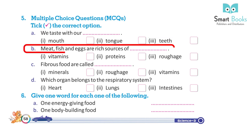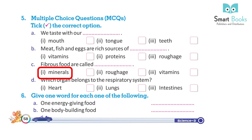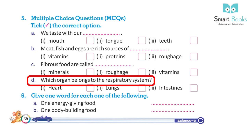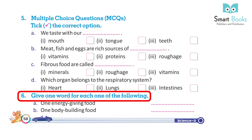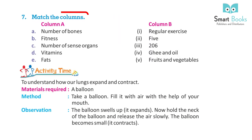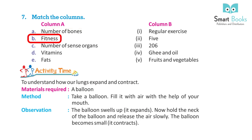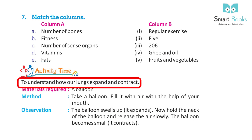Multiple choice questions: a) We taste without ___: mouth / tongue / teeth. b) Meat, fish, and eggs are rich sources of ___: vitamins / proteins / roughage. c) Fibrous foods are called ___: minerals / roughage / vitamins. d) Which organ belongs to the respiratory system: heart / lungs / intestines. Give one word for: a) one energy-giving food, b) one body-building food. Match the columns: number of bones – 206; fitness – regular exercise; number of sense organs – five; vitamins – fruits and vegetables; fats – ghee and oil.